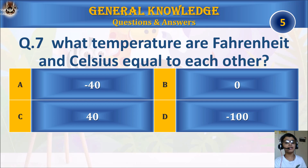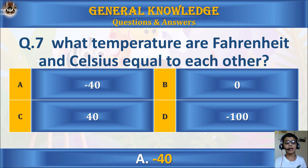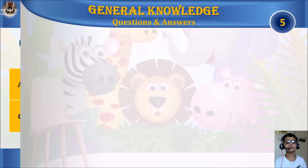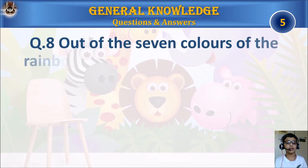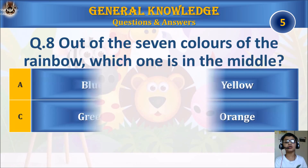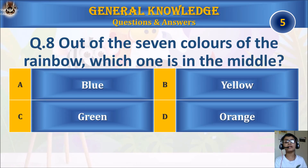Question 7: At what temperature are Fahrenheit and Celsius equal to each other? A: Minus 40, B: 0, C: 40, or D: Minus 100. Your time starts. The answer is A: Minus 40. Question 8: Out of the seven colors of the rainbow, which one is in the middle? A: Blue, B: Yellow, C: Green, or D: Orange. Your time starts.